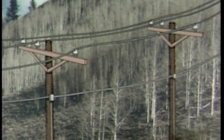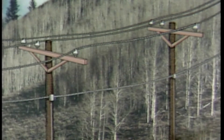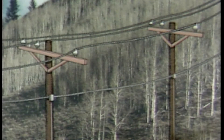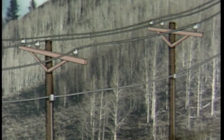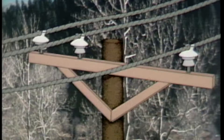A ground is an intended path for current to flow to the earth. During normal operation, current flows through the lines. A ground fault occurs when a low resistance electrical path to ground is created unintentionally by a defect in the circuit.